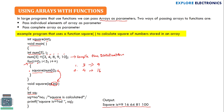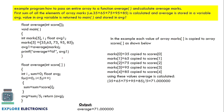This is how we can send array elements one by one to a function. Now let's see how to send a complete array to a function. Here we have a float-type function to calculate the average. Suppose a student has scored these marks in 5 subjects and we need to calculate the average. We declare this function with type float because the average can be a decimal value — when dividing, we need float as the data type.